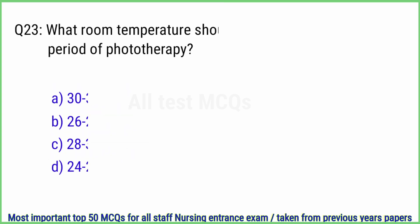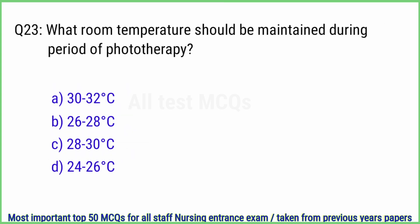Q23. What room temperature should be maintained during a period of phototherapy? The right answer is option C, 28 to 30 degrees.